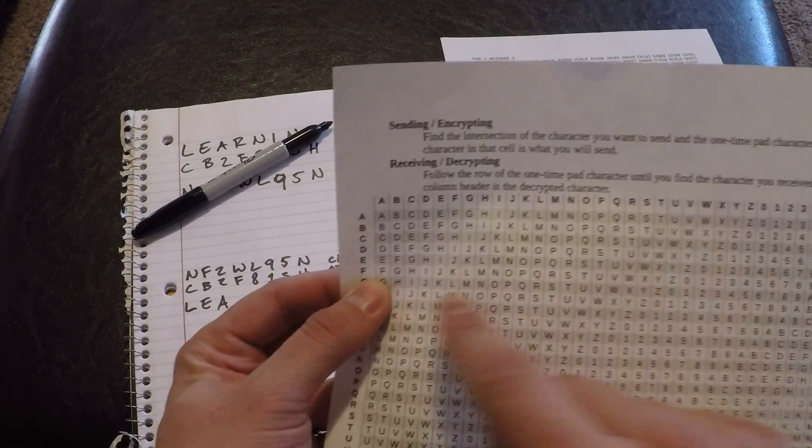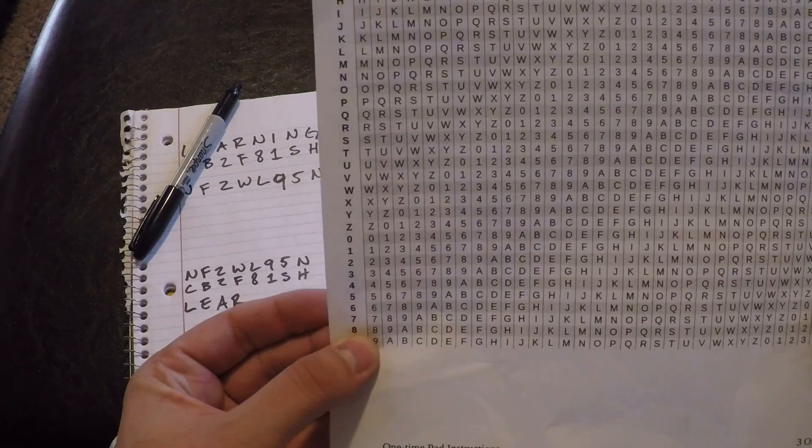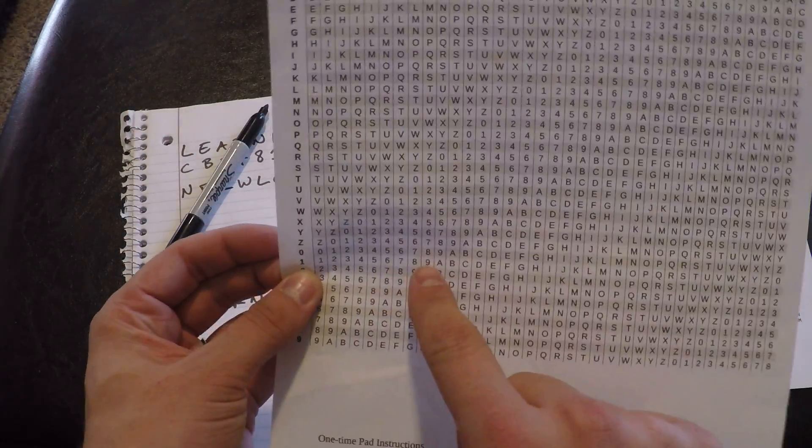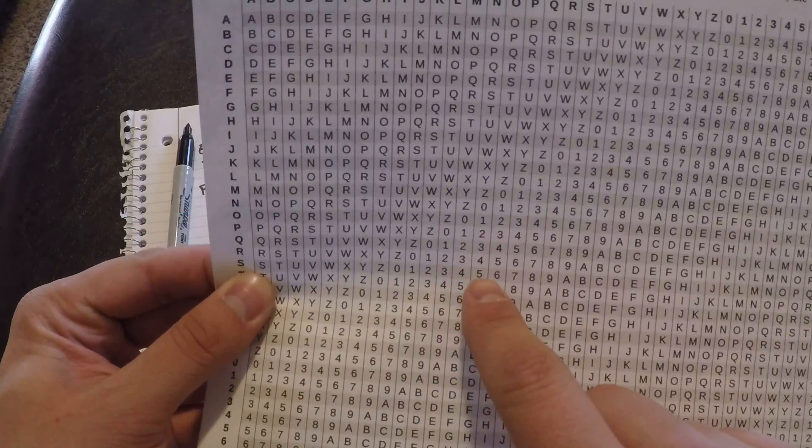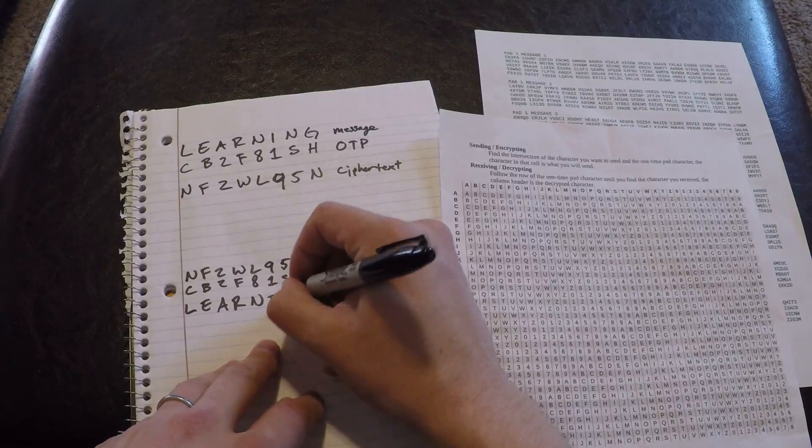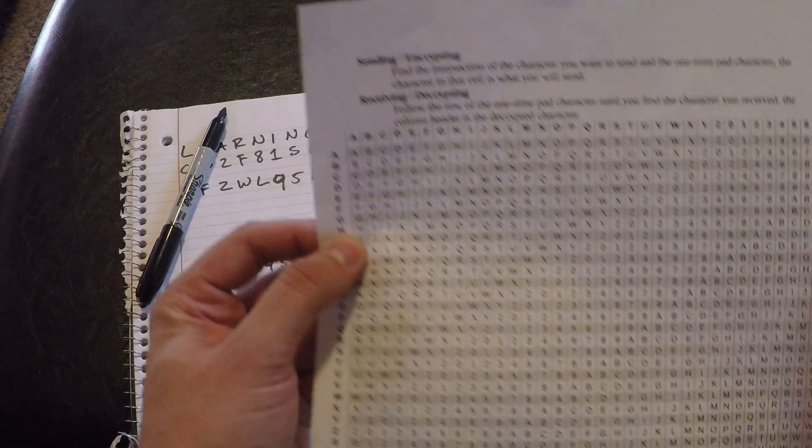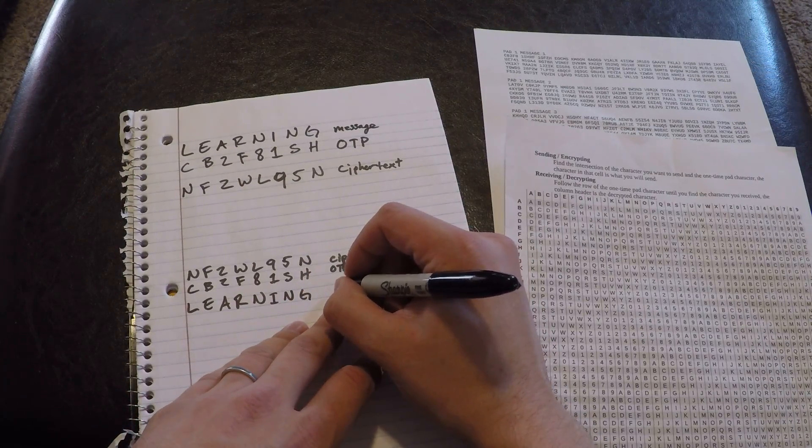Now we go with F. Go until we find W, which is R. And I'm just going to go through these real quick. 8 over to L, which is N at the top. Now we want to do 1 until we find 9. 1 over to 9. Top of that is I. S over to 5, which is N. And then last but not least, H over to N, which is G. And that's our message.